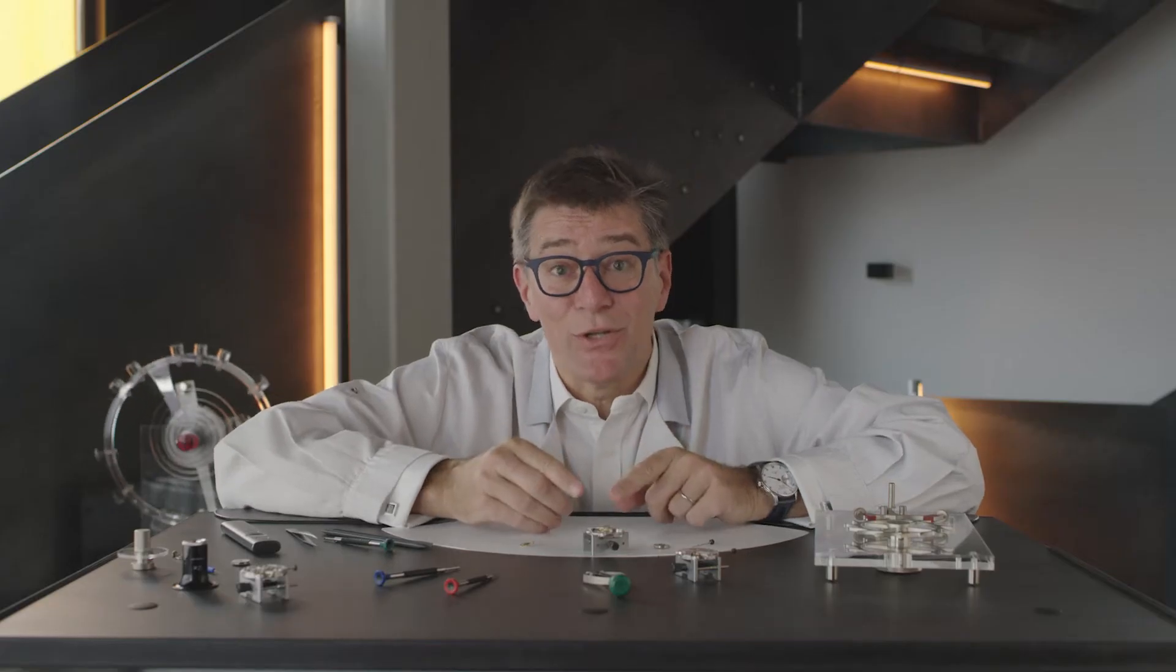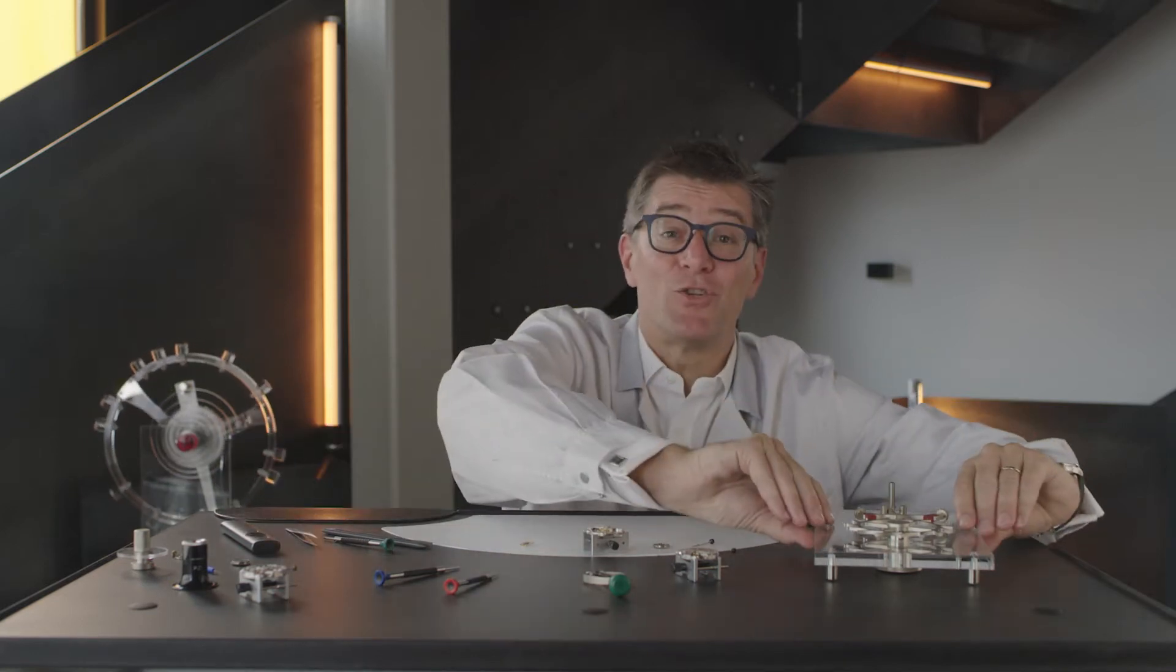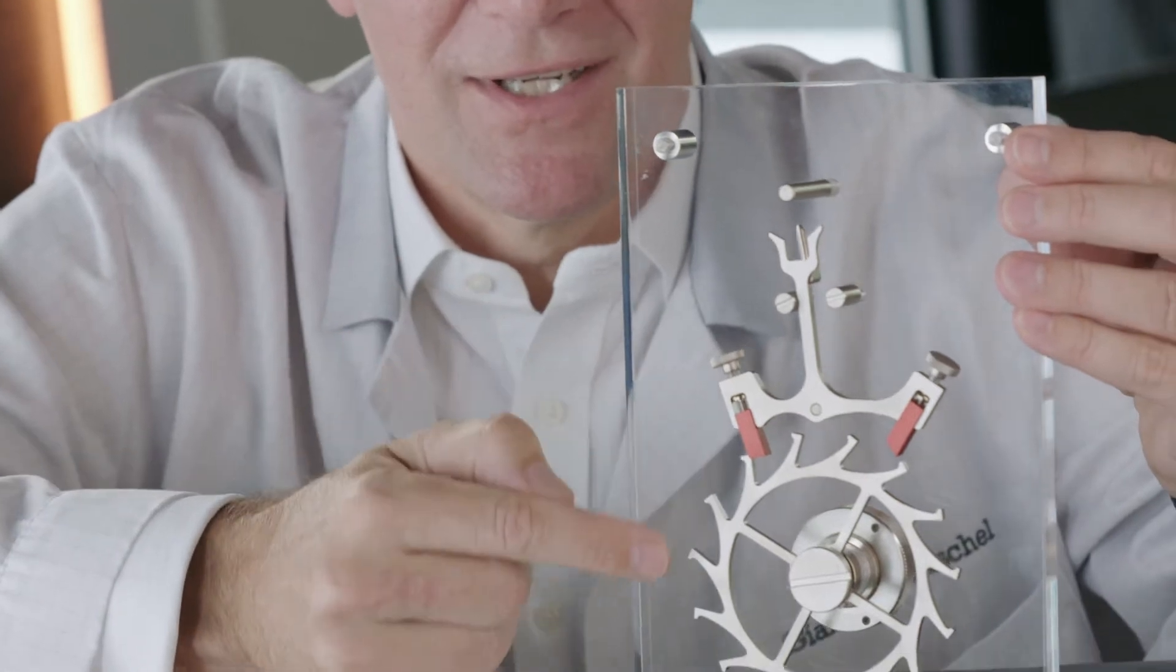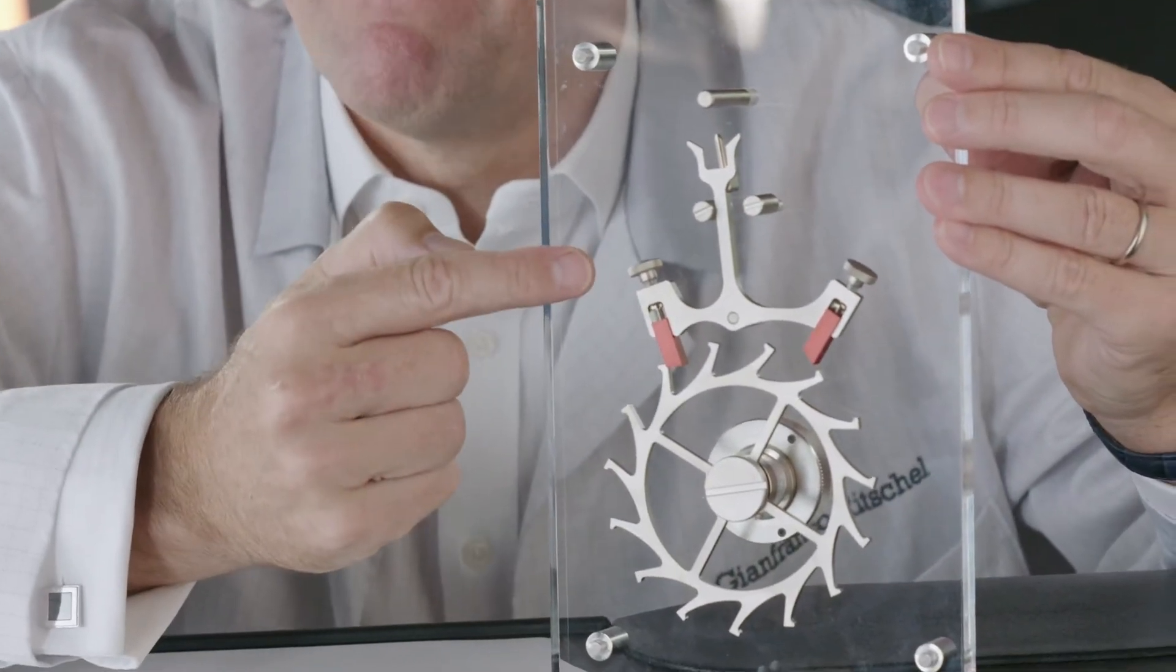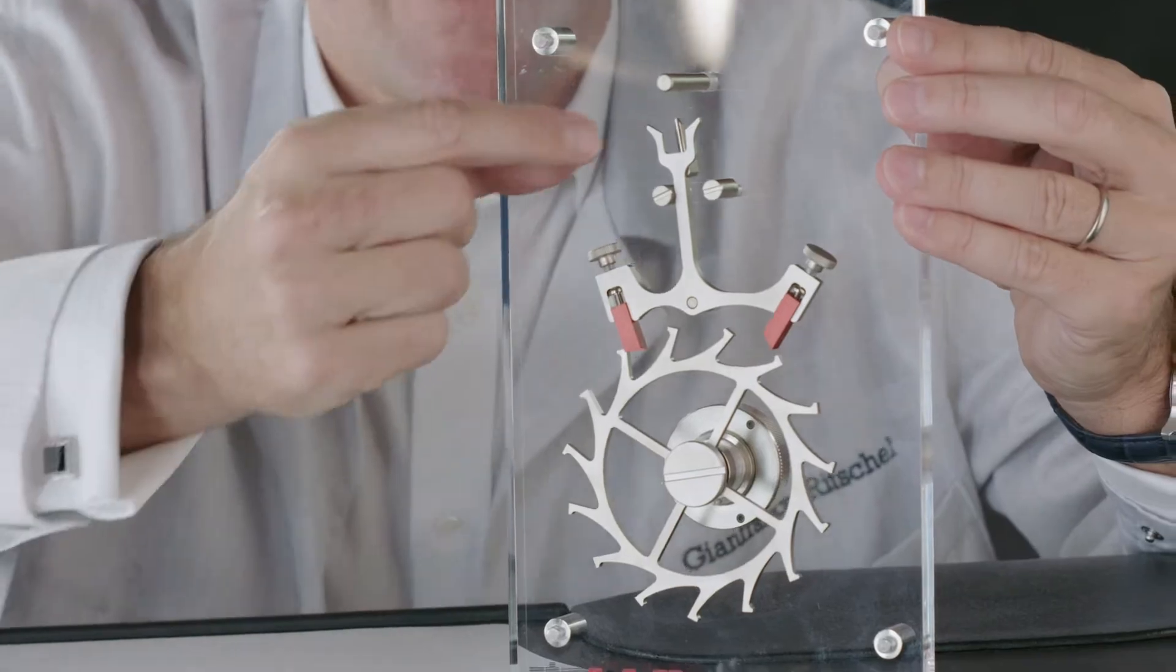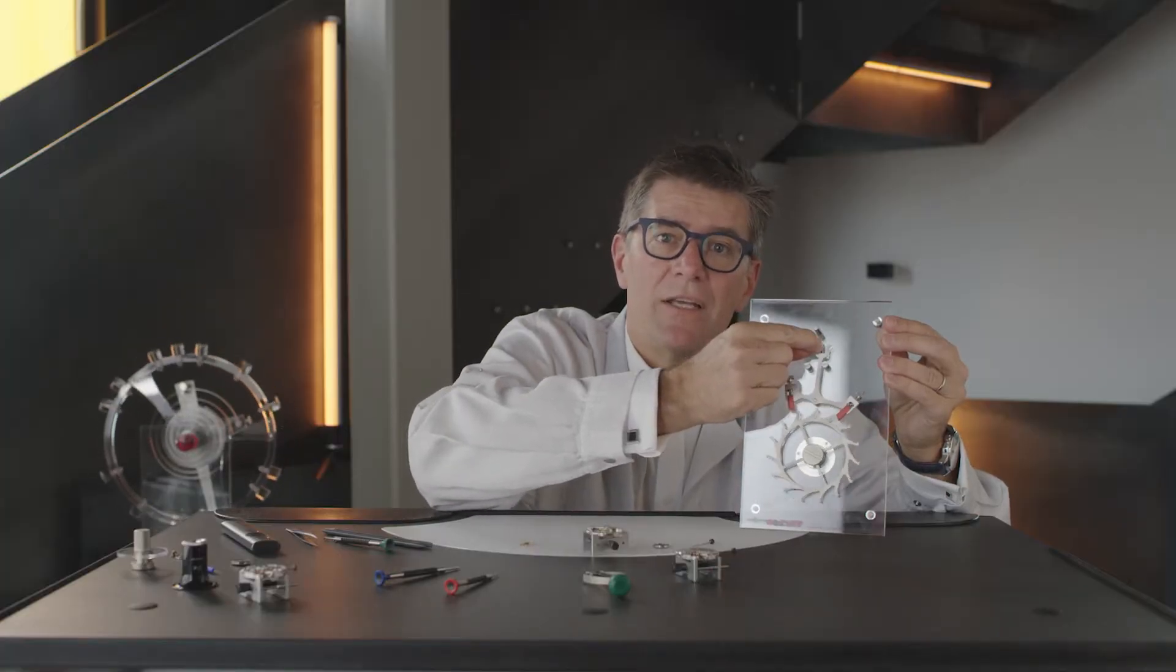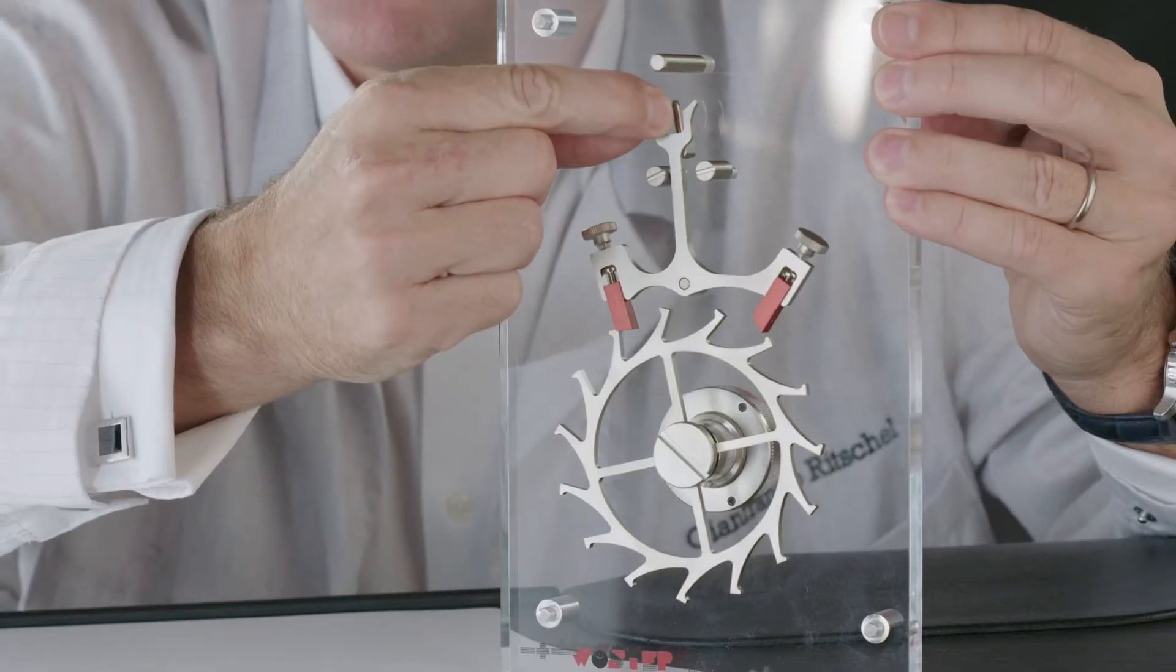As it's too small to show it to you, I will use this supersized model here. We speak about the escapement wheel and the lever. This little lever releases one tooth after the other one in a controlled way, step by step.